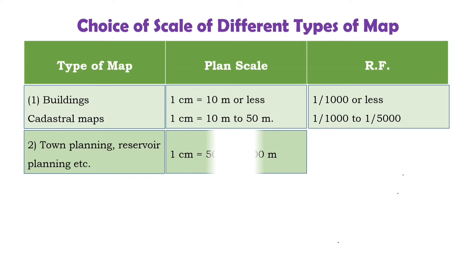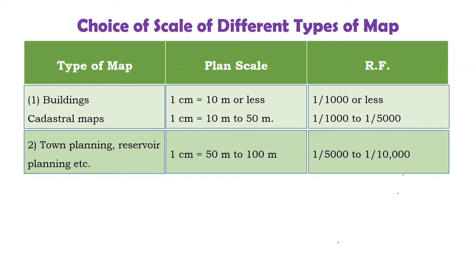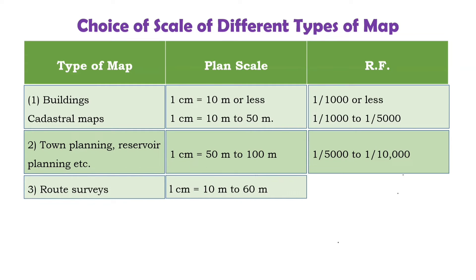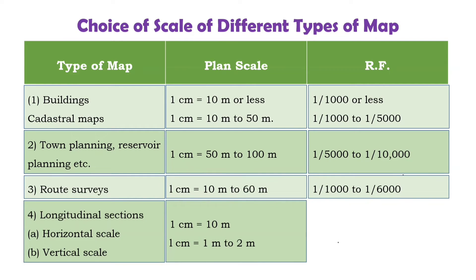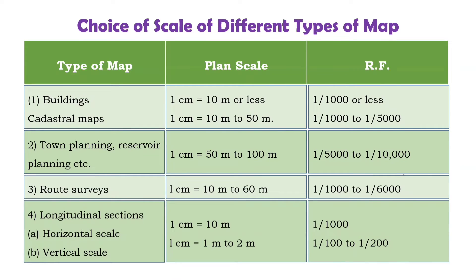For town planning and reservoir planning, the scale is 1 centimeter equals 50 meters to 100 meters, with RF of 1 in 5,000 to 1 in 10,000. For route survey, the scale chosen is 1 centimeter equals 10 meters to 60 meters, with RF of 1 in 1,000 to 1 in 6,000. For longitudinal sections, the horizontal scale is 1 centimeter equals 10 meters and the vertical scale is 1 centimeter equals 1 to 2 meters, giving RF of 1 in 100 to 1 in 200.